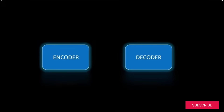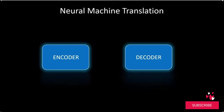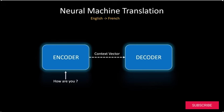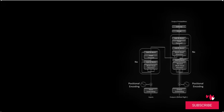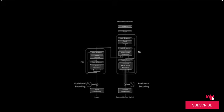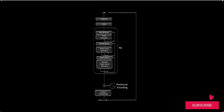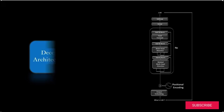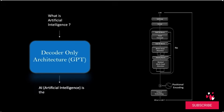Initially, the encoder and decoder of transformers were designed for neural machine translation tasks, like translating from English to French. The encoder takes input text in English, processes it, and generates a context vector. The decoder then takes the context vector and generates the translated text in French. However, in modern large language models like GPT — as introduced in OpenAI's paper on generative pre-training — the encoder part is omitted and only the decoder part is used. This decoder-only model takes input text and predicts the next word, allowing it to generate coherent and contextually relevant text.